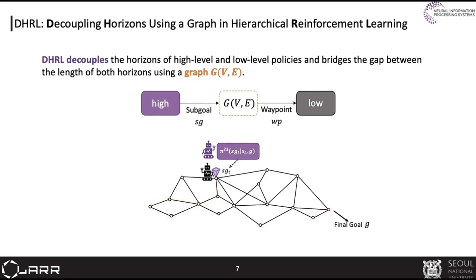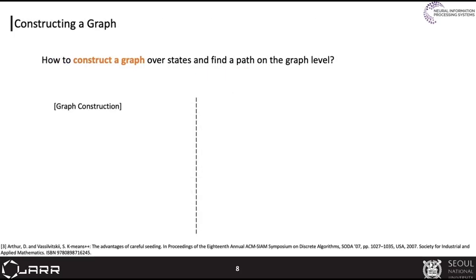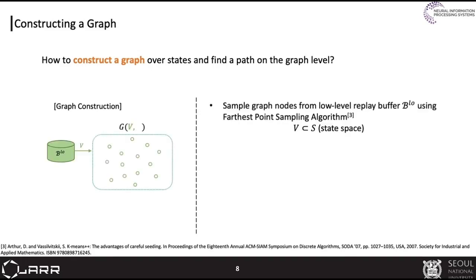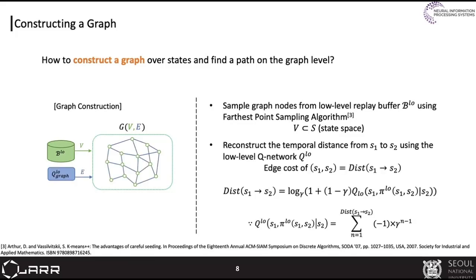After a certain time step, the upper policy provides a new sub-goal and this whole process is repeated until the final goal is achieved. To construct a well-formed graph over states, we first sample graph nodes from the low-level replay buffer, then reconstruct the temporal distance between states using a low-level queue network.